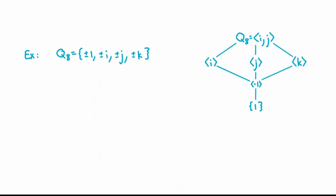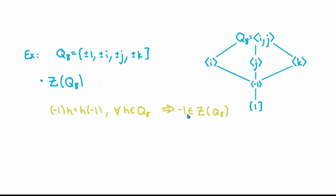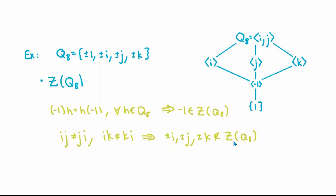Let's conclude this video by taking a look at a few examples, and for our examples let's work with the group of quaternions. First, what's the center of this group? By the definition of multiplication in the quaternions, the element negative 1 commutes with every other element, so negative 1 is an element of the center. On the other hand, i and j don't commute, and neither do i and k, so none of these elements or their negatives are elements of the center. That means the center of the quaternion group is just the group consisting of the identity and negative 1.